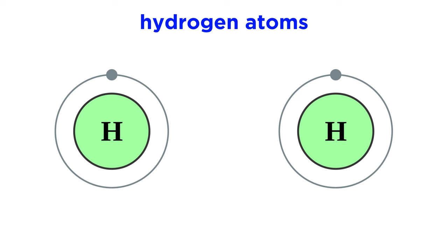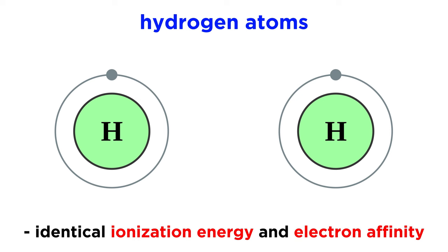Let's look at two hydrogen atoms. Given that these have precisely the same ionization energy and electron affinity, electron transfer will not occur, so an ionic bond is not a possibility.